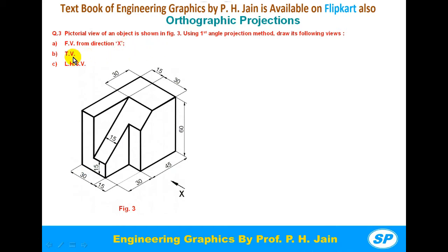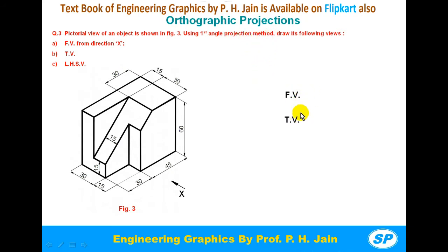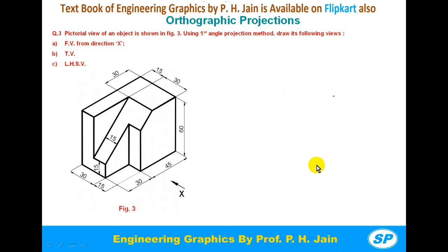The front view is always drawn on the vertical plane (VP), the top view is drawn on the horizontal plane (HP), and the side view is drawn on the profile plane (PP). According to the first angle projection method, the front view is above the top view, and the left hand side view is always towards the right of the front view.